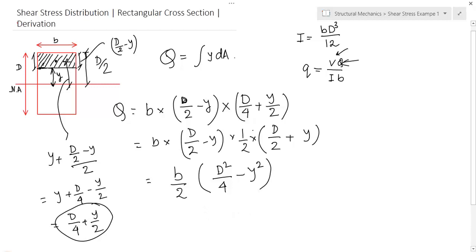So, b by 2 into d square by 4 minus y square. So, you have got the Q. And what is small q, the shear stress? It is V by I b into Q.